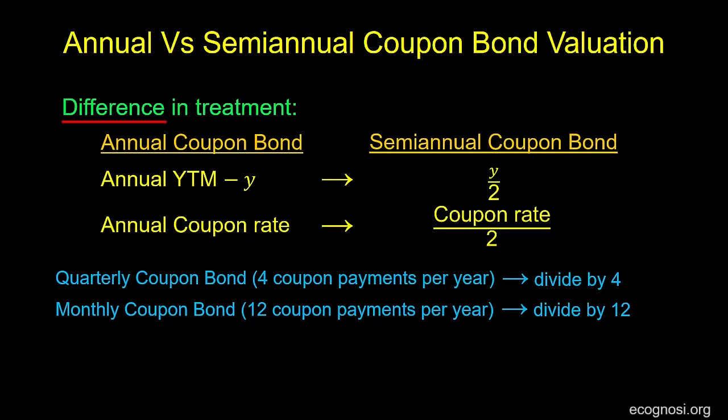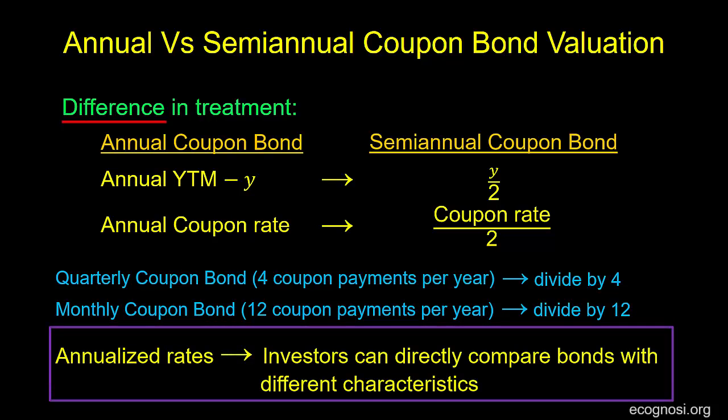Now I would like to close this video with the following. In case you are wondering why these rates are given in annual terms and it is left for us to make the necessary adjustments before proceeding with our calculations — the reason is because if they are all annualized, it means that they have a common base that allows investors to directly compare bonds with different characteristics.